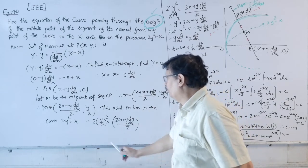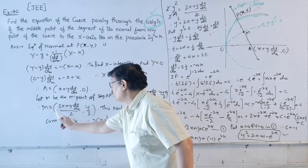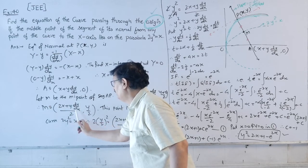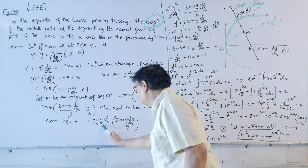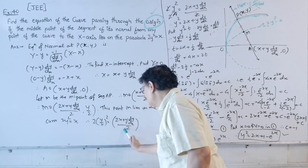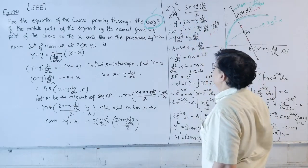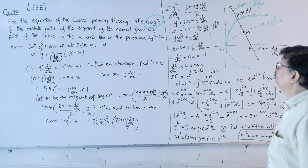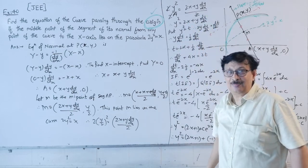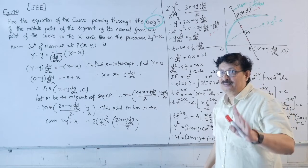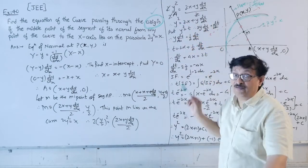Simplifying 2·(y/2)² = (y²/2) and the right side (2x + y·dy/dx)/2: we get y²/2 = x + (y/2)·(dy/dx), so y² = 2x + y·(dy/dx). This equation has y² and y·(dy/dx), so put y² = t, giving 2y·(dy/dx) = dt/dx, hence y·(dy/dx) = (1/2)·(dt/dx).